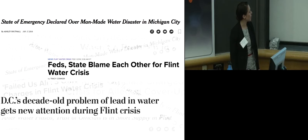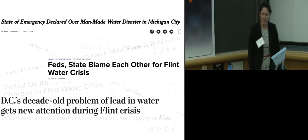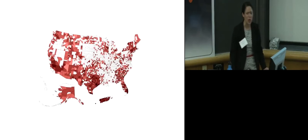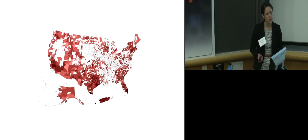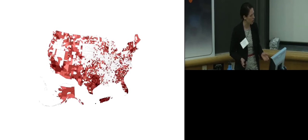And finally, D.C.'s decade-old problem of lead in water gets new attention during Flint crisis. So, this happened 13 years earlier in D.C. when lead was leaching from the pipes. And this can happen in cities and towns across the country. In 2015, there were 5,300 water systems with lead and copper rule violations. This warrants the need for systems thinking to understand this complex problem and particularly the critical points of failure to prevent history from repeating itself.